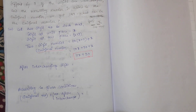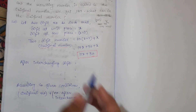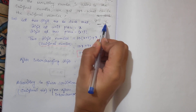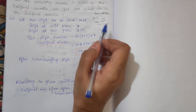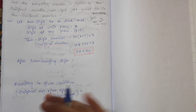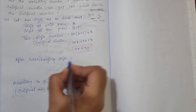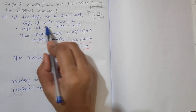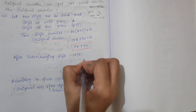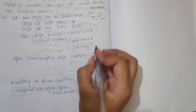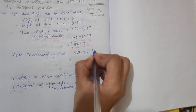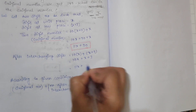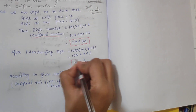Now we interchange the digits — the digit at unit place goes to tens place and the digit at tens place goes to unit place, as seen in the previous video. After interchanging, the new number is 10 into x plus (x plus 3). Opening the bracket gives 10x plus x plus 3, which equals 11x plus 3.